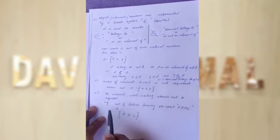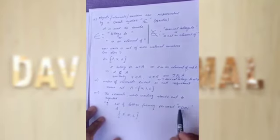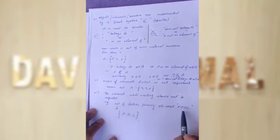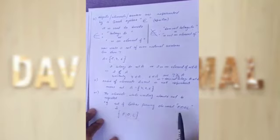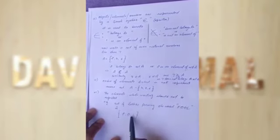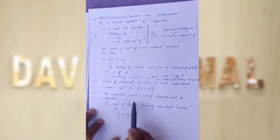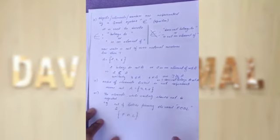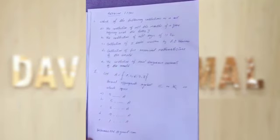To understand this, write the set of letters forming the word FOOL (F-O-O-L). The elements enclosed within curly brackets are: first letter F, then O. Because there is another O, we do not write O again. Then L. So the set has three elements: {F, O, L}. Elements while writing should not be repeated.